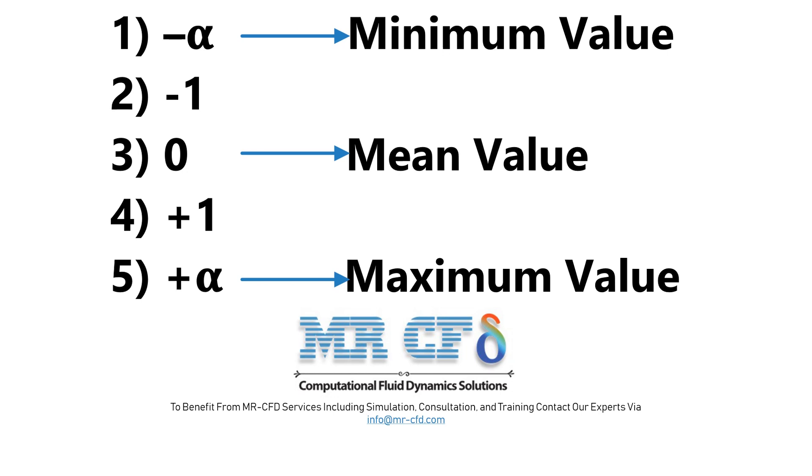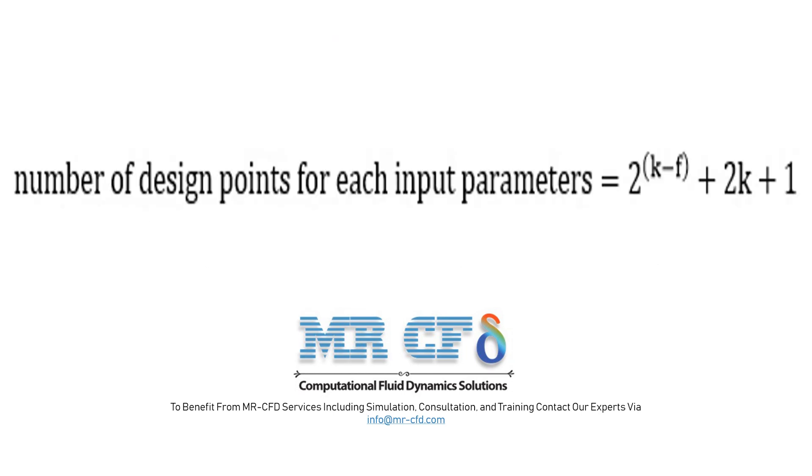Therefore, each input parameter is divided into five parts or levels between its maximum and minimum values. The number of divided modes in the present model is obtained from this equation in which k is the symbol of the number of input parameters or factors.